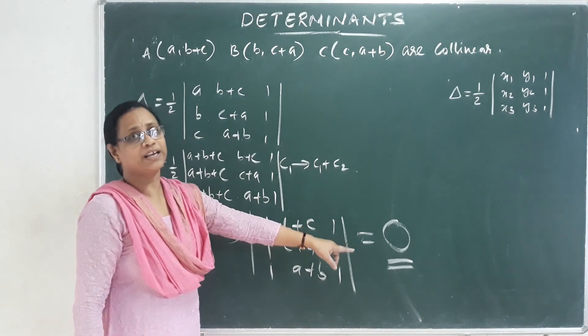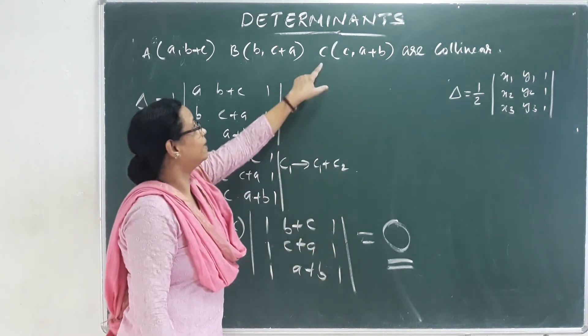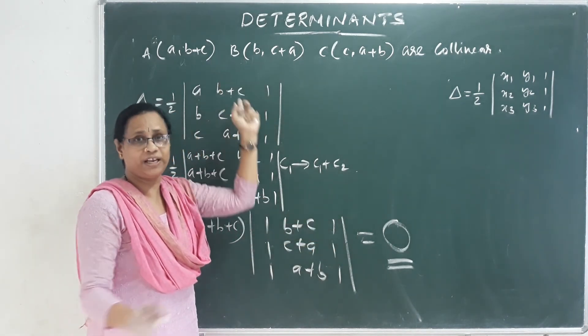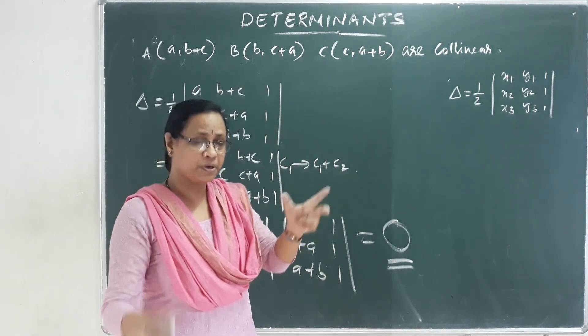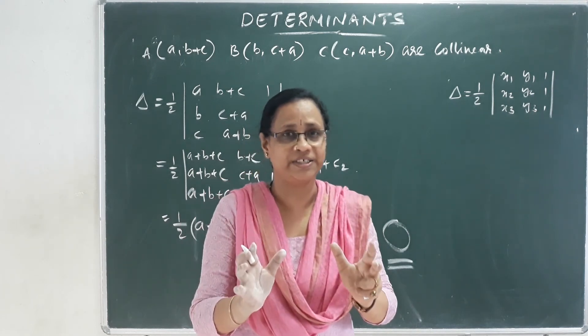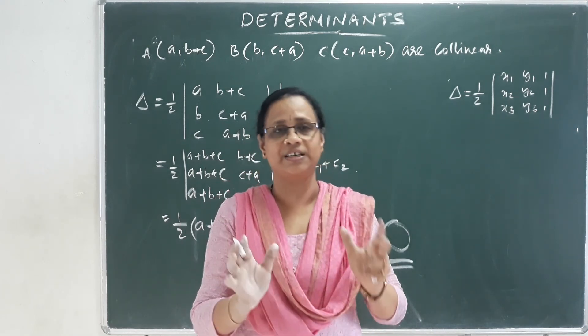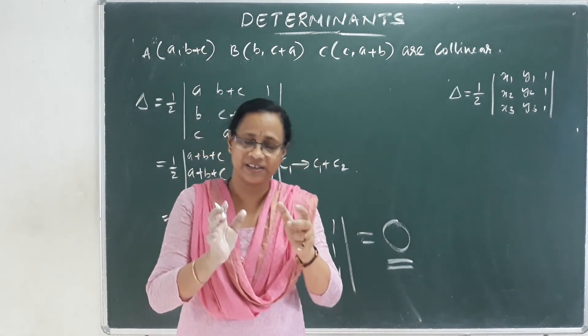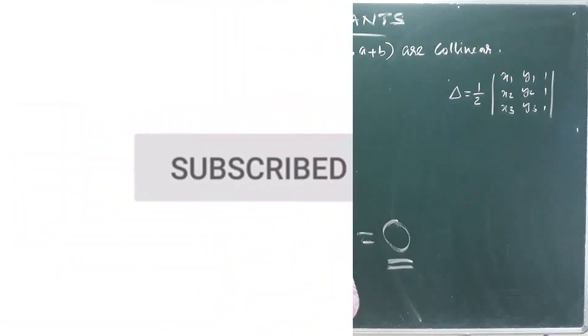When the value is 0, we call it 3 collinear points. In this chapter, there are 3 contents — very small and very simple contents. It is very simple.